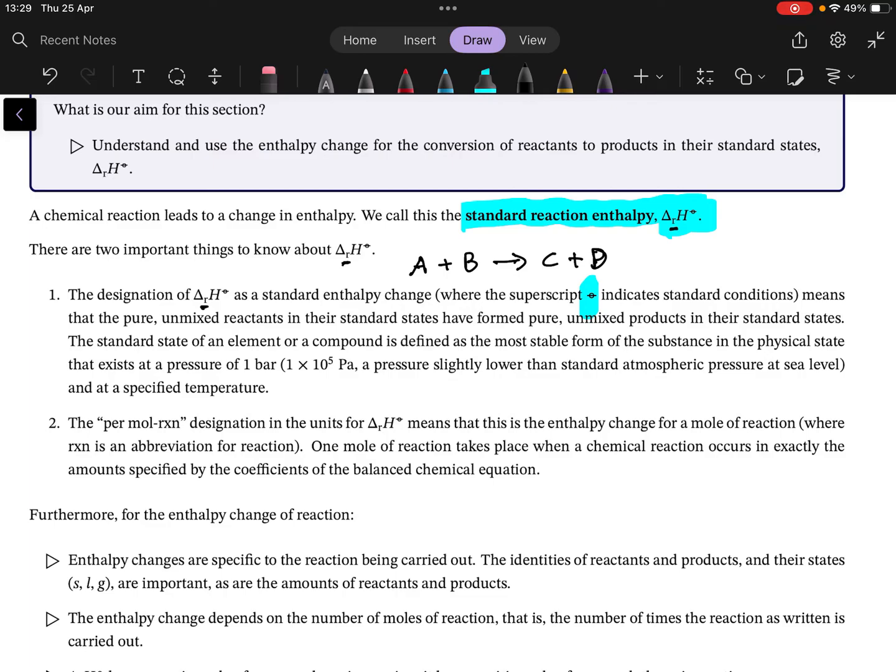Delta rH has units of kilojoule per mole, but in this case we call it kilojoule per mole reaction. The question is: what does per mole reaction mean?